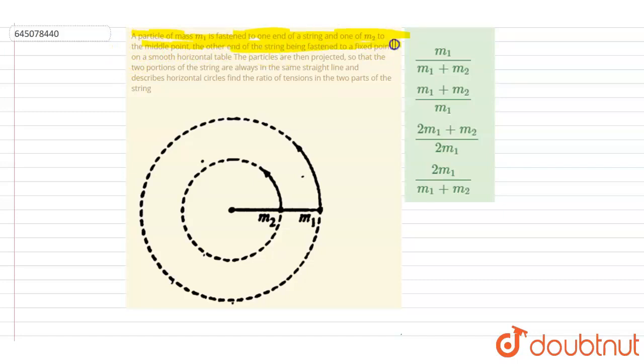Find the ratio of tension in the two parts of the string. So if I say the tension at this part is T1, here the tension is T2. If you see, this force is the tension force that will act on the two particles.